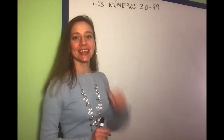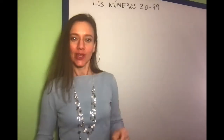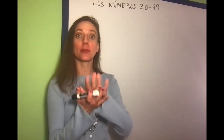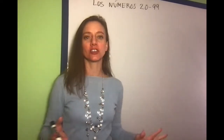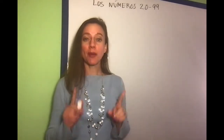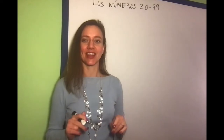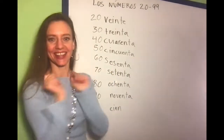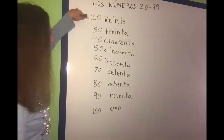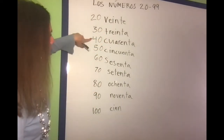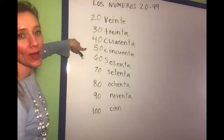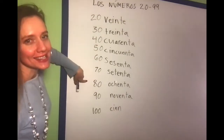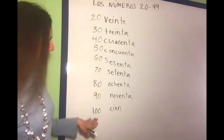Los números 20 al 99. We're going to start with the 30s because the pattern from 30 all the way to 100 is the same. Let's remember how to count by tens: veinte, treinta, cuarenta, cincuenta, sesenta, setenta, ochenta, noventa, cien.